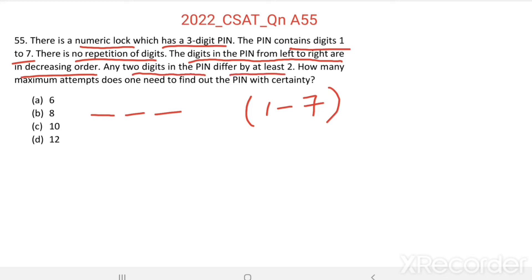That means, if first digit is 7, then there should be at least a two difference with the second digit. So, second digit is 5 and third digit should be, there should be at least two difference with the third digit. So, third digit is 3. And from left to right, it is in the decreasing order. It is given here.